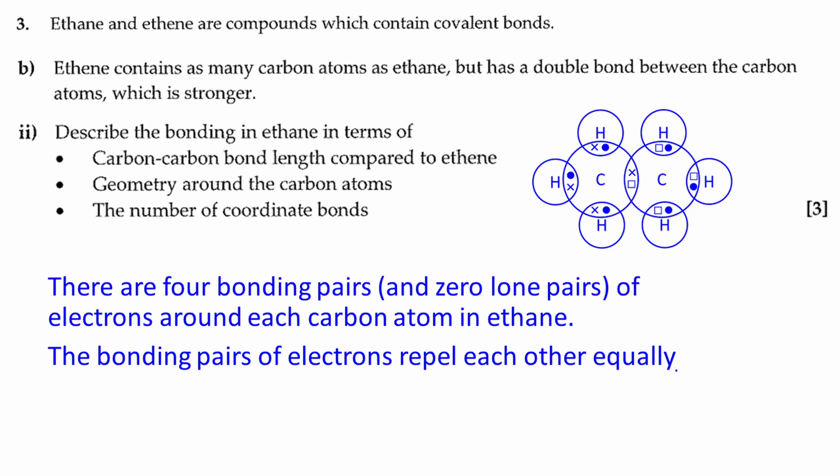Next, let's look at the geometry. We constructed the dot and cross diagram for ethane earlier. From this, we can see that there are four bonding pairs and zero lone pairs of electrons around each carbon atom in ethane.